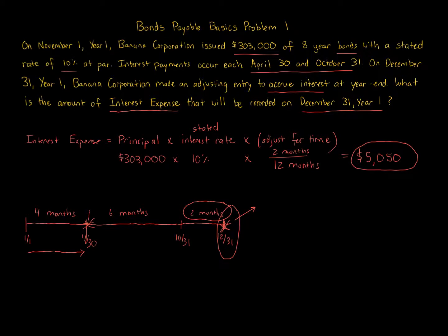So after we do the adjusting entry on December 31st, then when we do the next entry for these bonds on April 30th, we're only going to calculate four months worth of interest. So it's going to be $303,000 times 10% times four months over 12 months, and you calculate that amount.